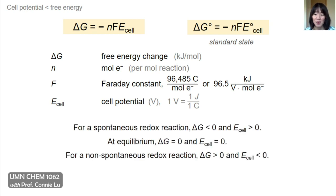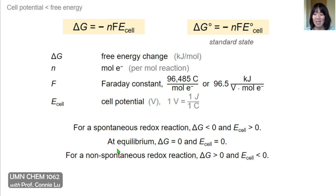This equation is really important for determining spontaneity. For a redox reaction to be spontaneous, the free energy change must be negative and the cell potential must be positive. When the redox reaction reaches equilibrium and all net reaction stops, ΔG is zero and the cell potential is also zero. If ΔG is positive or the cell potential is negative, the redox reaction as written is non-spontaneous, but the reverse reaction would be spontaneous.